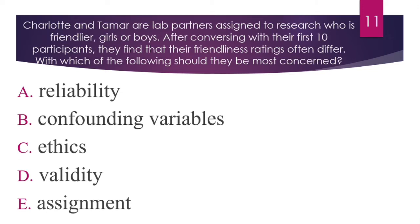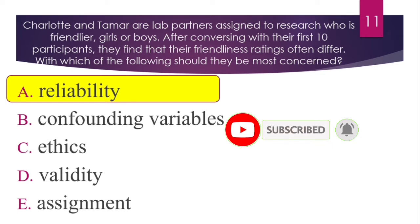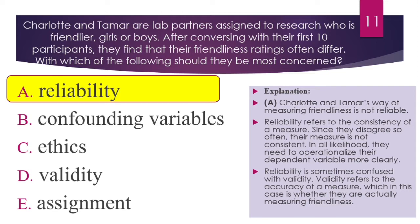Question number 11. Carlotti and Tamer are lab partners assigned to research who is friendlier — girls or boys. After conversing with their first 10 participants, they find that their friendliness ratings often differ. With which of the following should they be most concerned? The answer is A — reliability. The scale is being applied by different people and yielding different results, meaning the scale is not reliable. Reliability refers to the consistency of a measure; since they disagree so often, their measure is not consistent. They need to operationalize their dependent variable more clearly.